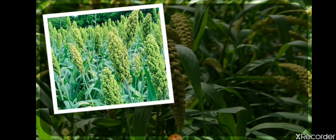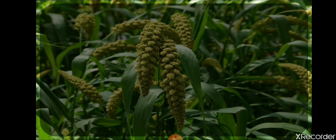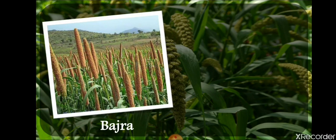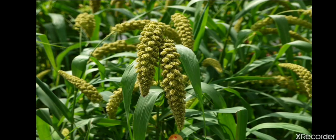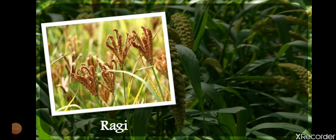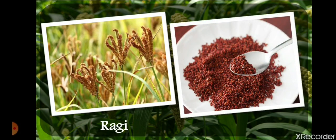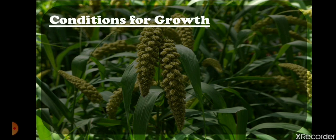The teacher shows pictures of jowar, bajra, and ragi crops and grains. Jowar has grain that people use to make chapatis and bread. Bajra is also shown as crops and grain. Ragi is a very small grain. These are all varieties of millet, also called sorghum.